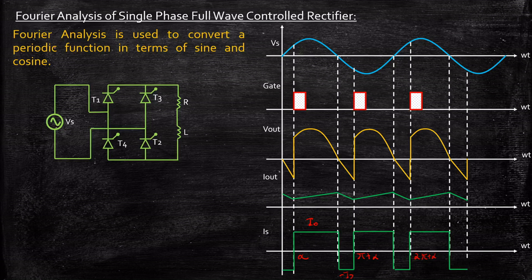Why is that required? That is required for harmonic analysis. When I say harmonic analysis, there are a lot of parameters that you have to find out, like the RMS value, the total harmonic distortion, and the average value. So in order to do that, we will be requiring the Fourier analysis. So now you know what Fourier analysis is and why it is required.